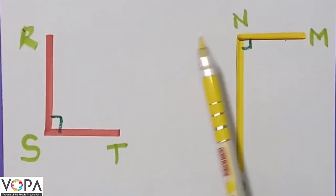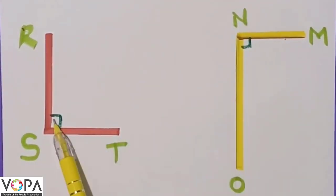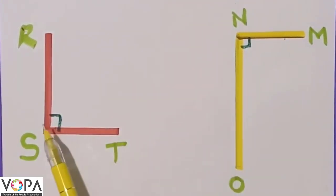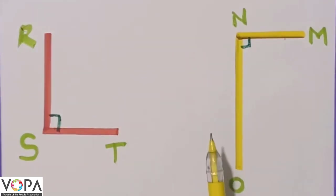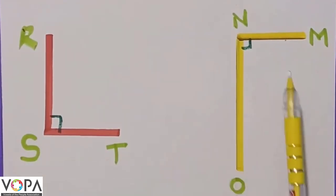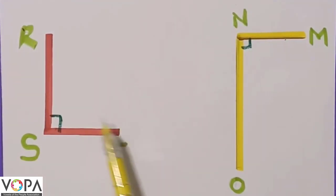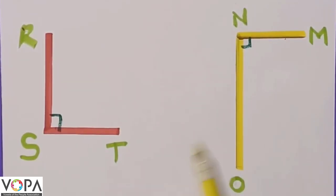When two lines form an angle of 90 degrees with each other, they are said to be perpendicular lines. Which two lines form an angle of 90 degrees with each other? They are said to be perpendicular lines. Okay, do you understand? Now solve the assignment. Okay, bye bye!